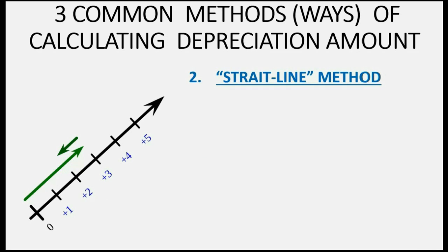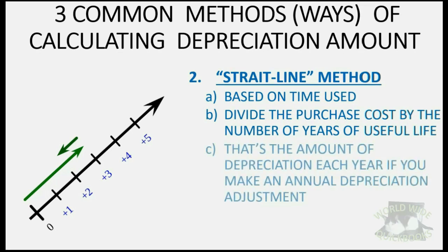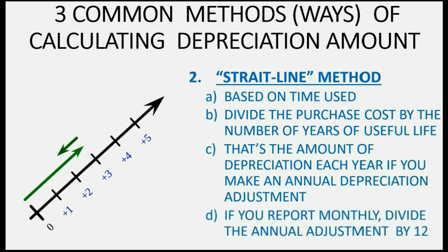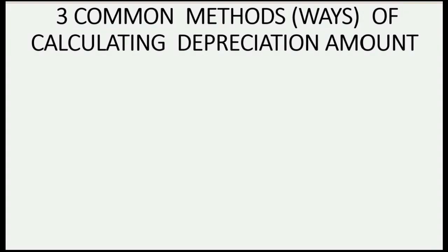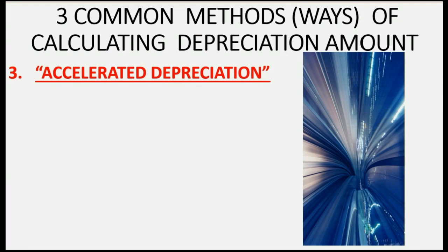The second method is the straight line method. It's called straight line because every year has the same amount of depreciation. This method is based on time spent using the asset. You divide the purchase cost by the total number of years in its useful life to get annual depreciation. If you report monthly, divide the annual amount by 12.